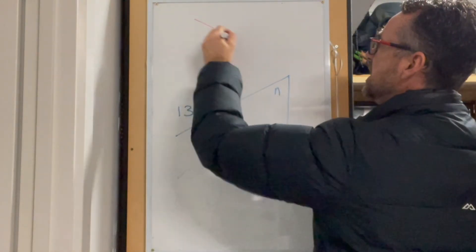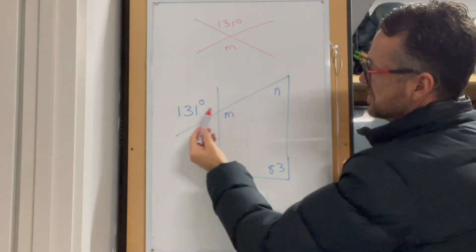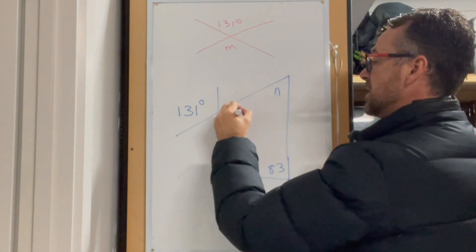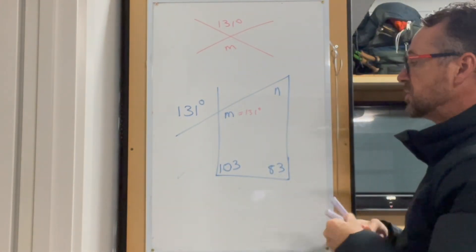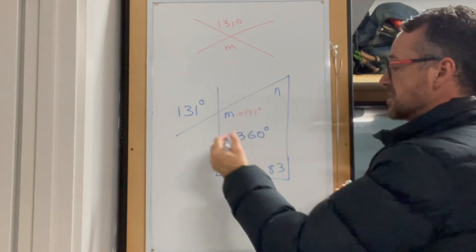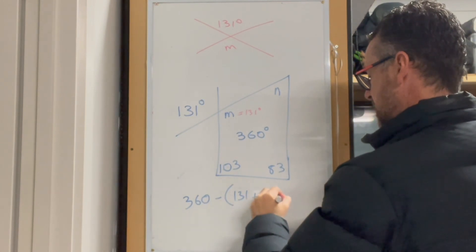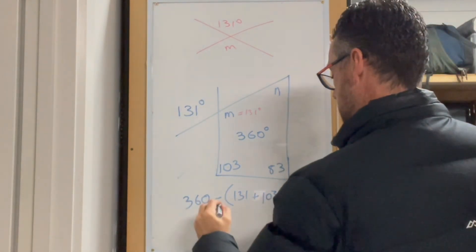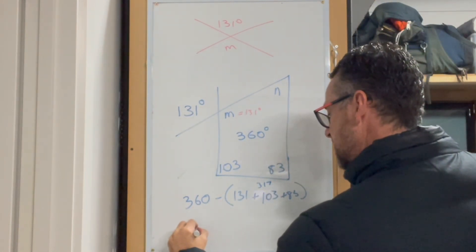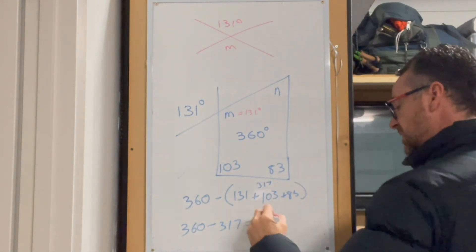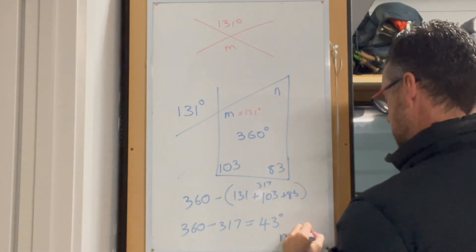The last diagram has a quadrilateral with crossing lines. With crossing lines, vertically opposite angles are equal, so m equals 131 degrees. Using that in the quadrilateral — which adds up to 360 degrees — we get 360 take away (131 plus 103 plus 83). That adds up to 317, so 360 take away 317 leaves us with 43 degrees. Therefore n equals 43 degrees.